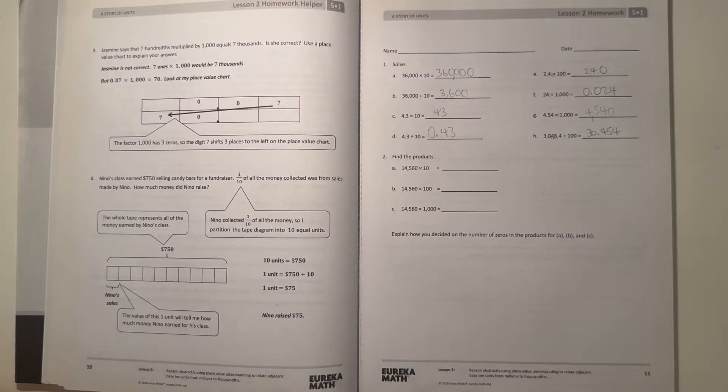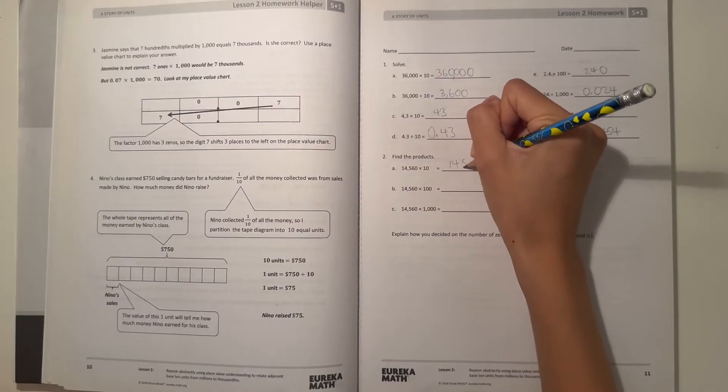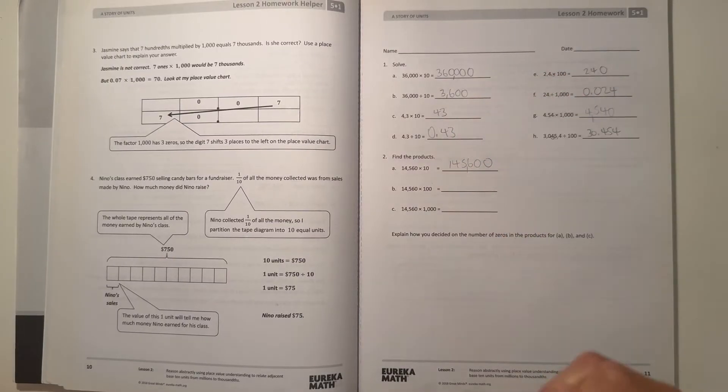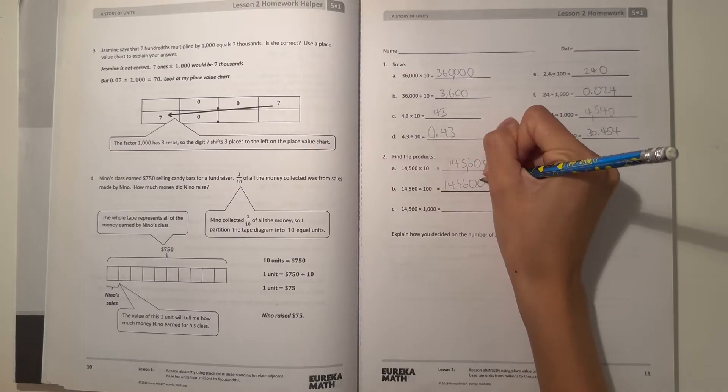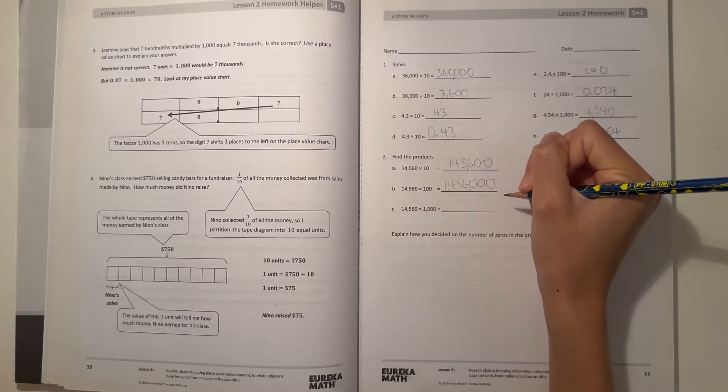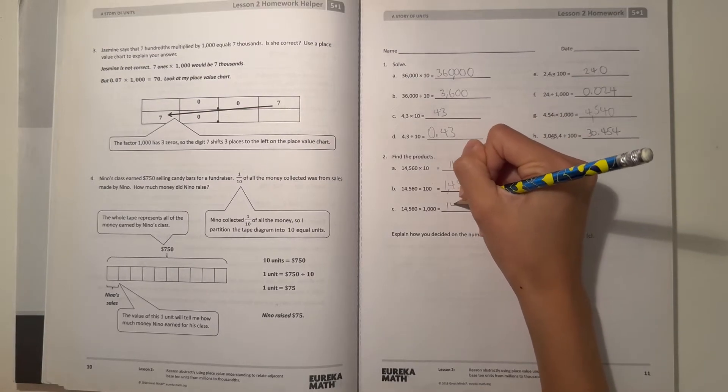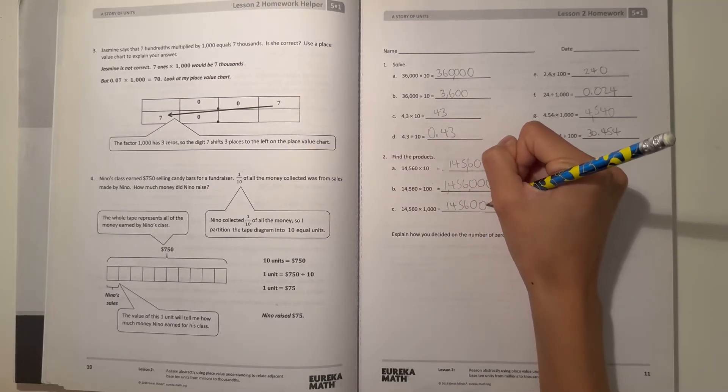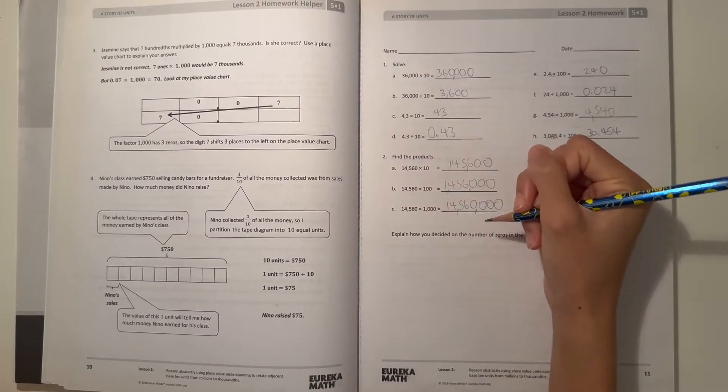Number two, find the product. So the product is the answer we get when we're multiplying. So 14,560 times 10, and we just add one more 0. That would be 145,600. And now we have times 100, so we add two 0s. That would be 1,456,000. And now if we're multiplying by 1,000, plus 1, 2, 3 zeros, that would be 14,560,000.